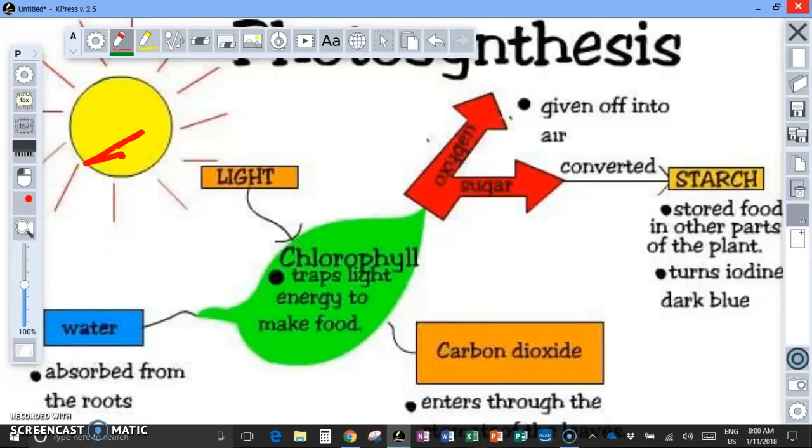And at times, sugars are sometimes used directly. Other times, they're also converted into other types of carbohydrates or starches where the food is stored or perhaps it might be converted into a form to use to make cell walls. But this is how, this is kind of the whole process in a nutshell here.